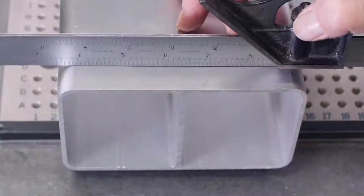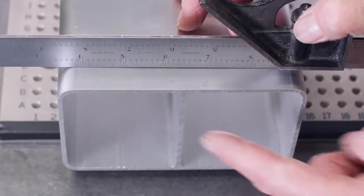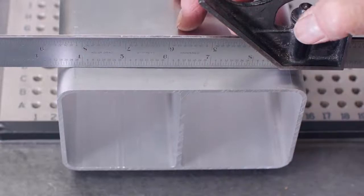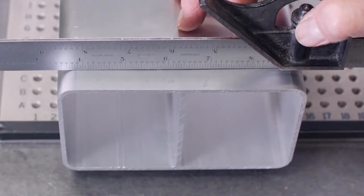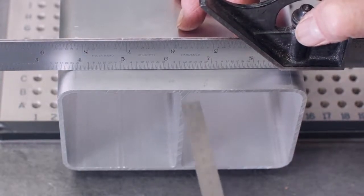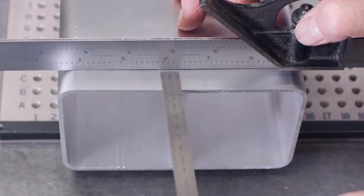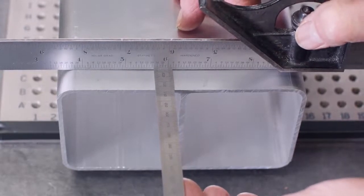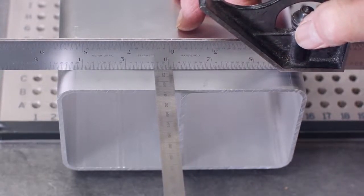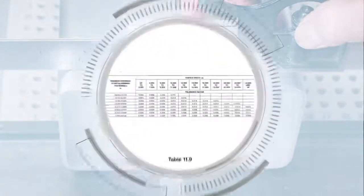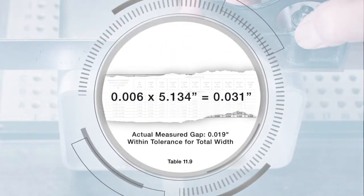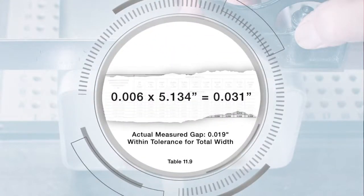To measure flatness, lay the straight edge across the entire width and use a feeler gauge to measure the gap between the straight edge and the profile's surface. The gap on this surface measures 19 thousandths of an inch, which is within the allowable total flatness tolerance of 31 thousandths of an inch.